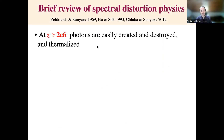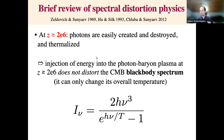In terms of the physics, let me highlight the essential points. At redshifts greater than about two million, corresponding to a couple of months after the Big Bang, CMB photons can be very easily created and destroyed through double Compton emission and free-free radiation, and thermalized. This means that if you inject or extract any energy from the photon-baryon plasma before two months after the Big Bang, you will still get a perfect blackbody spectrum. The photons quickly thermalize, with creation and destruction of photons and re-equilibration of their energies — giving a perfect blackbody, perhaps with a different temperature. So we cannot have any information about such high redshifts through spectral distortions.